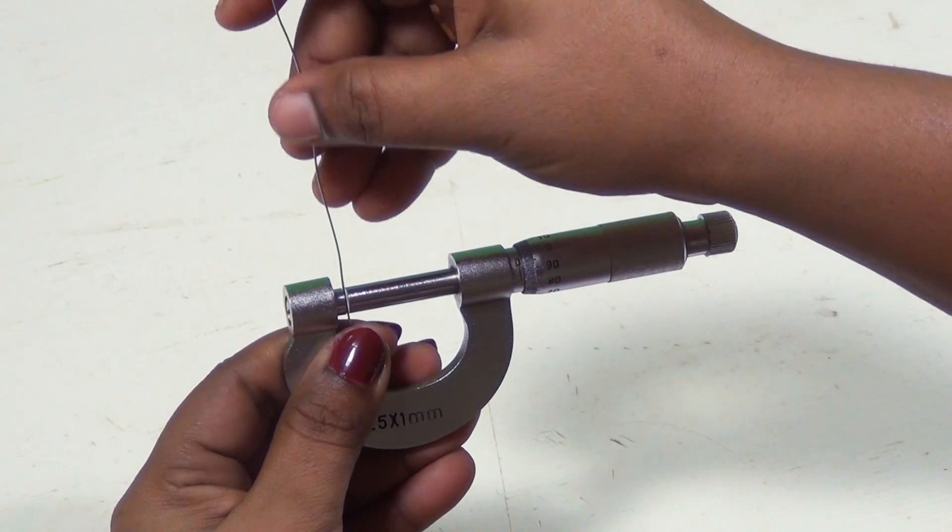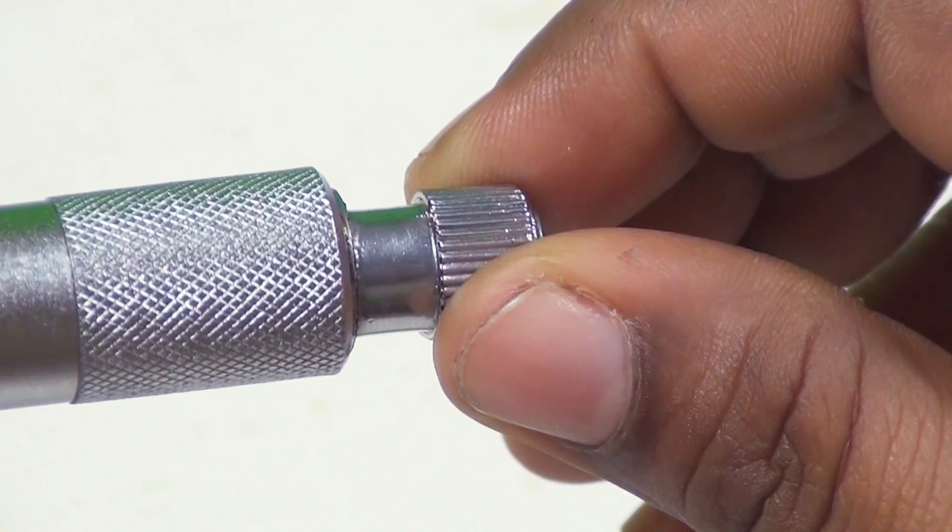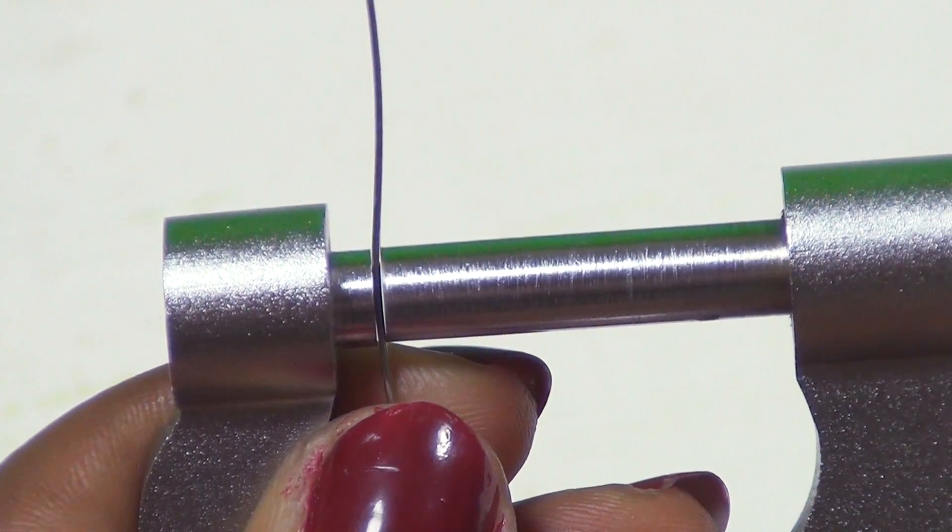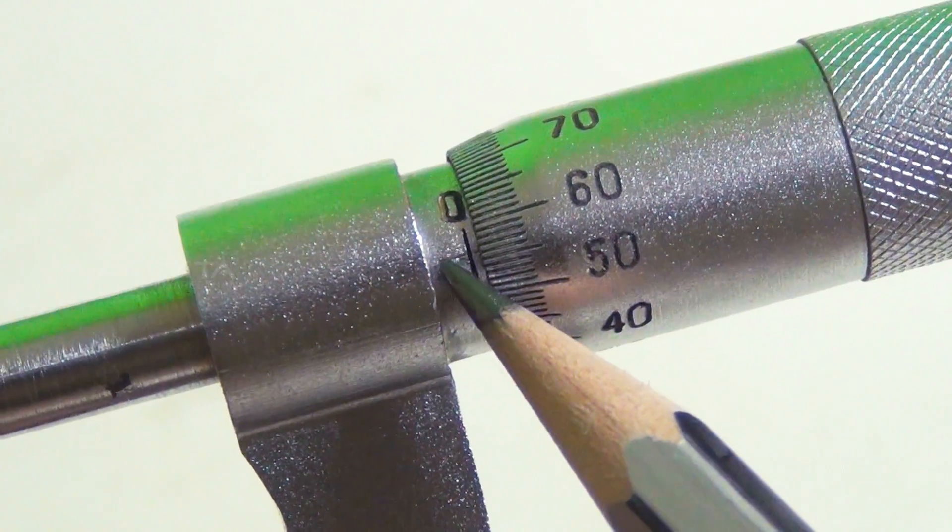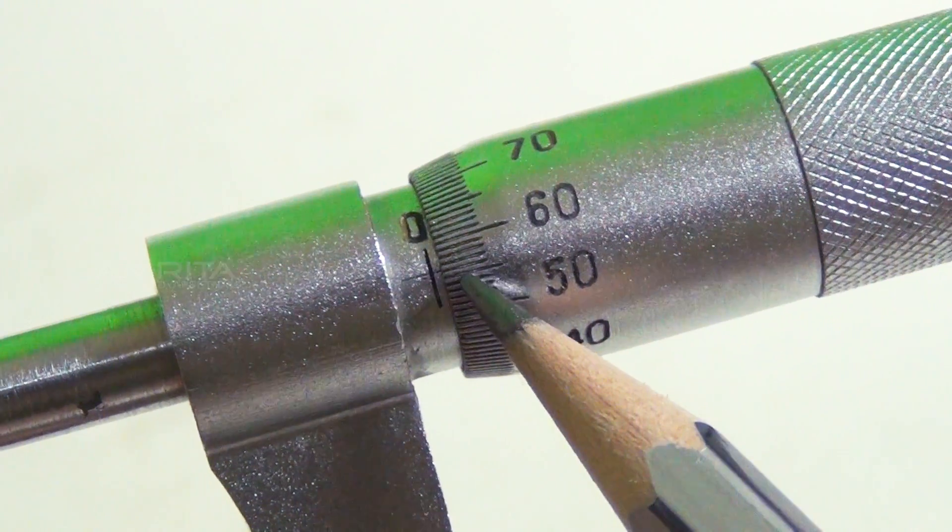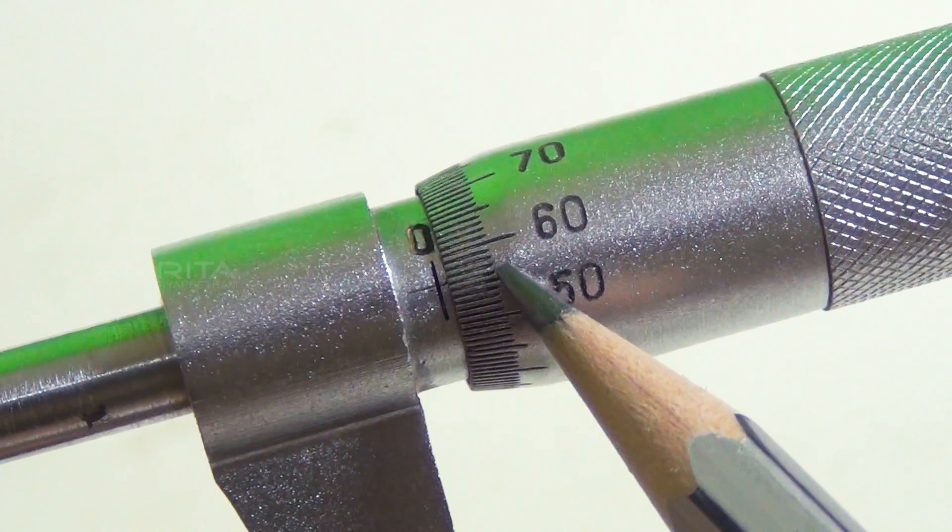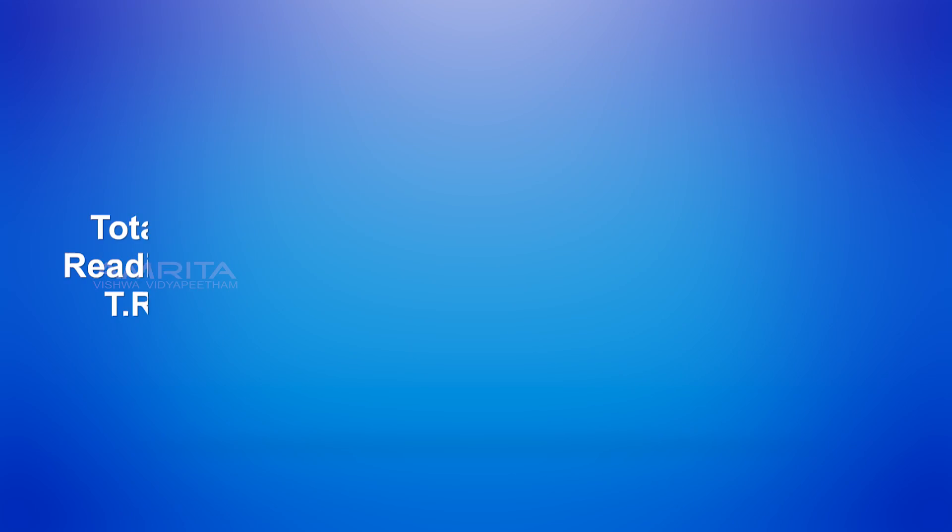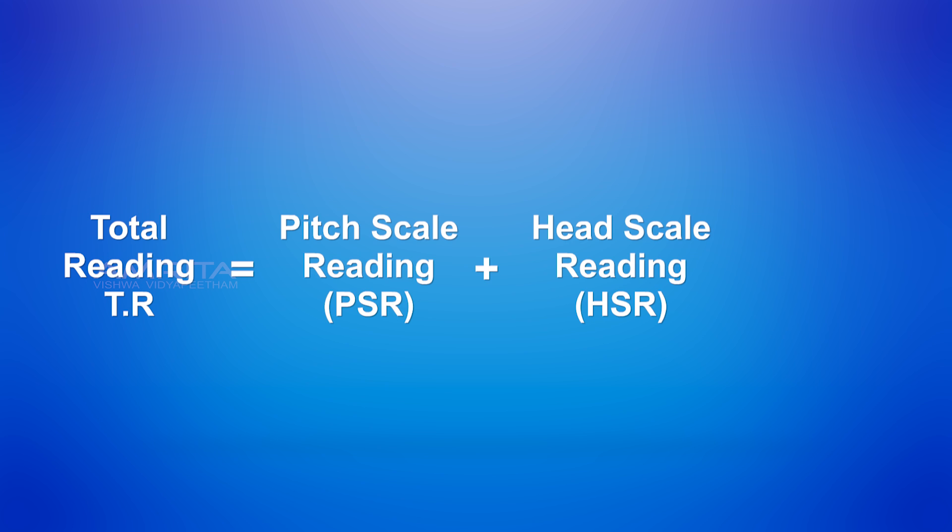Place the given wire between the tip of the screw and stud by tightening the ratchet. Note down the pitch scale reading and head scale reading. Diameter of the wire can be calculated using the relation total reading TR is equal to pitch scale reading plus head scale reading into least count.